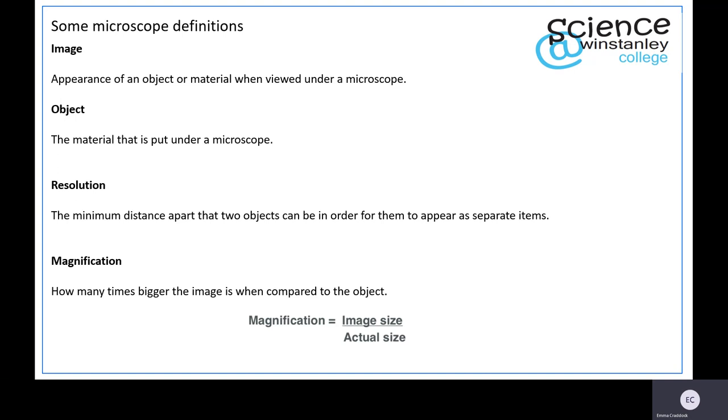Magnification is how many times bigger the image is when compared to the object. You can work out magnification using the equation: magnification equals image size over actual size. You can rearrange the equation to find different parts, such as actual size. We will do that in another video.